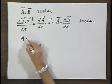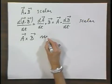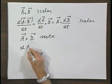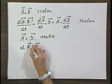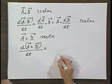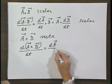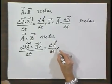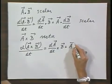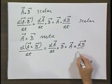A cross B is a vector. The time derivative of the cross product A and B, again I apply the chain rule, would be dA/dt crossed with B plus A crossed with dB/dt.